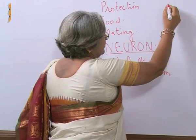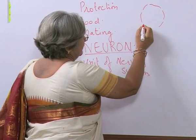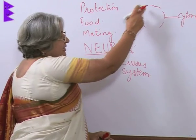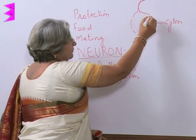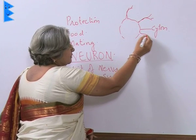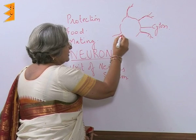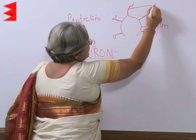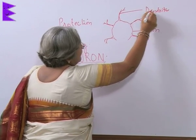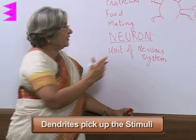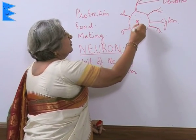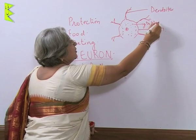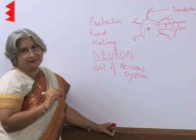It has a large rounded body which is called the cell body or the cytone. These are the branches that occur from the cytone. These branches are called dendrons, and their further branches are called dendrites. It is the dendrites that pick up the stimuli. The cytone has a large nucleus, lot of cytoplasm, and all cell organelles except one — the centriole.